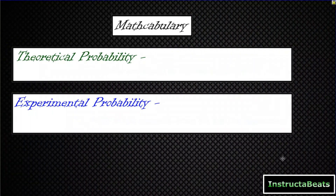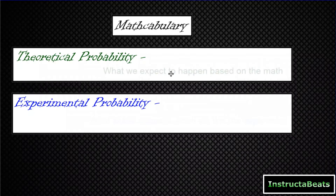Let's start with our mathcabulary. There are actually a couple different types of probability, and as you advance further into your math studies, you'll learn about all of them. But today we're going to be talking about theoretical probability and experimental probability. We've spent two lessons talking about probability without naming it, but what we were talking about was theoretical probability.